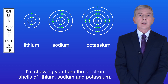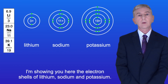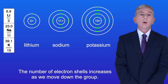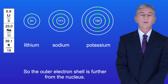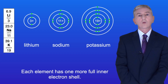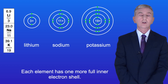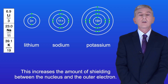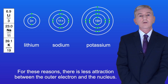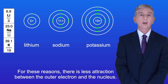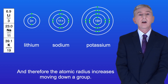I'm showing you here the electron shells of lithium, sodium and potassium. The number of electron shells increases as we move down the group, so the outer electron shell is further from the nucleus. Each element has one more full inner electron shell, which increases the amount of shielding between the nucleus and the outer electron. So for these reasons there's less attraction between the outer electron and the nucleus, and therefore the atomic radius increases moving down a group.